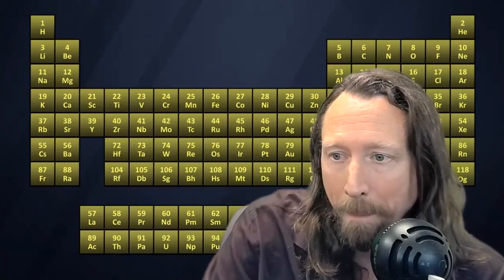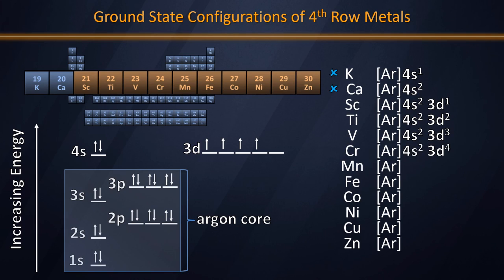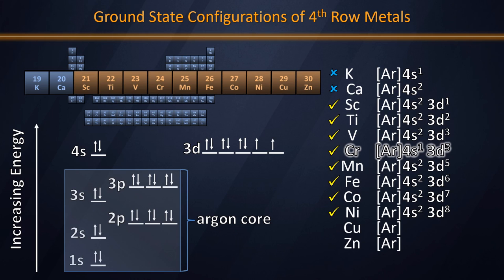Chromium is an interesting exception because in the case of chromium, we actually have 4S1, 3D5 due to the added energy benefit of having that half-filled D subshell. Moving on to manganese, things get back to normal all the way up through nickel, and then things change. This series of elements, scandium through nickel, most certainly do fit IUPAC's definition of transition elements.